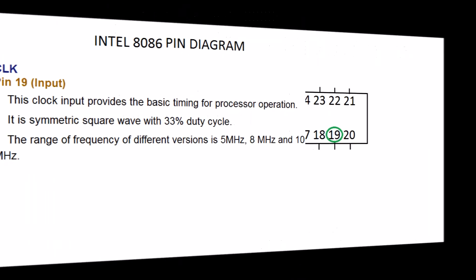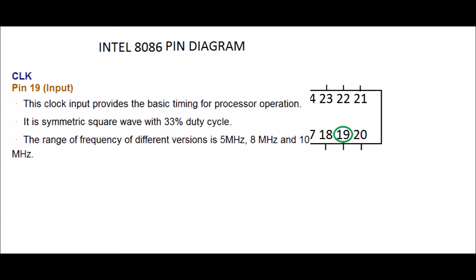CLK, PIN 19. Input. This clock input provides the basic timing for processor operation. By this we can easily find which is faster in process. It is symmetric square wave with 33% duty cycle. The range of frequency of different versions is 5 MHz, 8 MHz and 10 MHz.